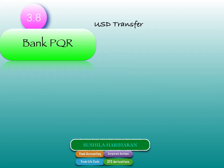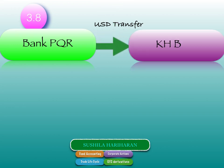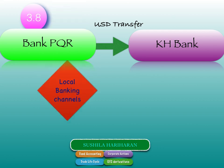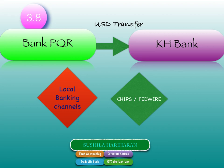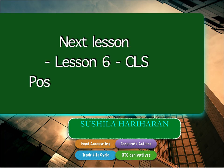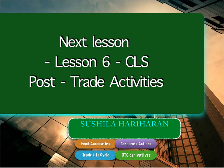Bank PQR, which receives the instructions, will then transfer the funds to KH Bank. This is a domestic transfer within the USD banking system, through local banking channels — either through CHIPS or through Fedwire. We look forward to the next lesson on CLS to understand more about netting.